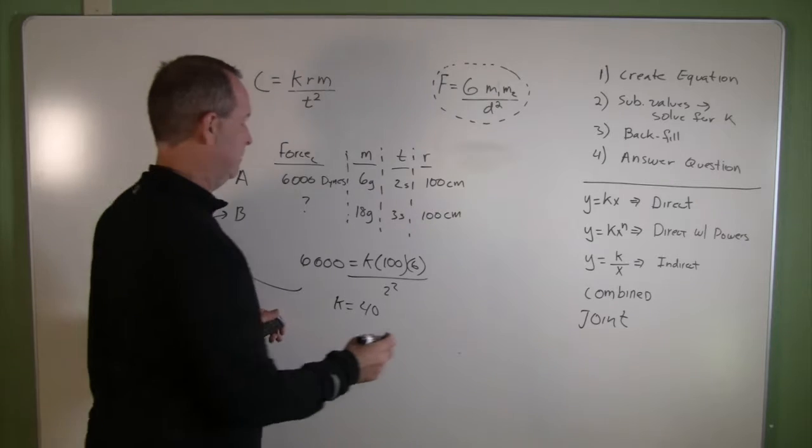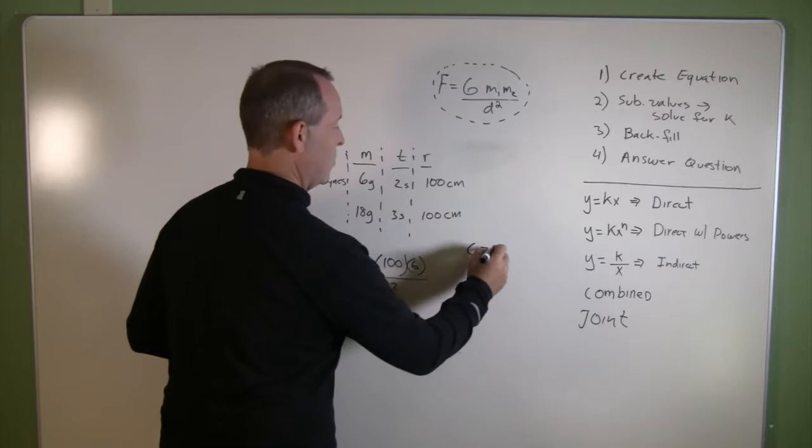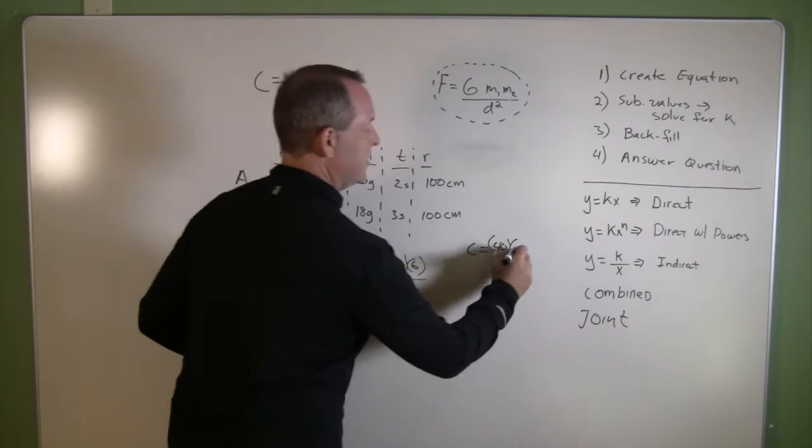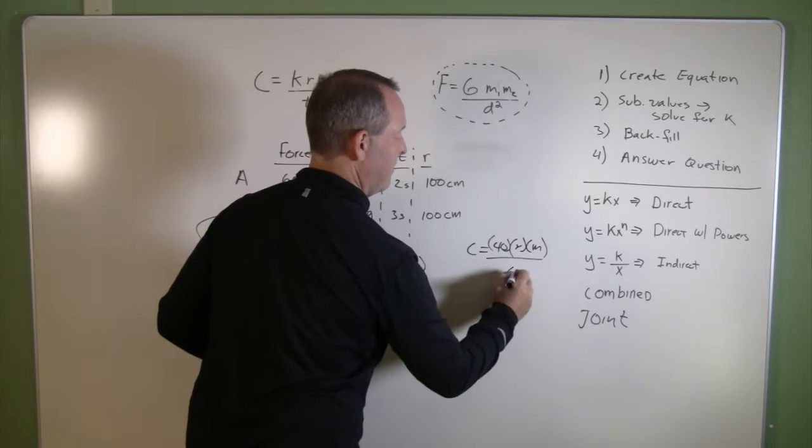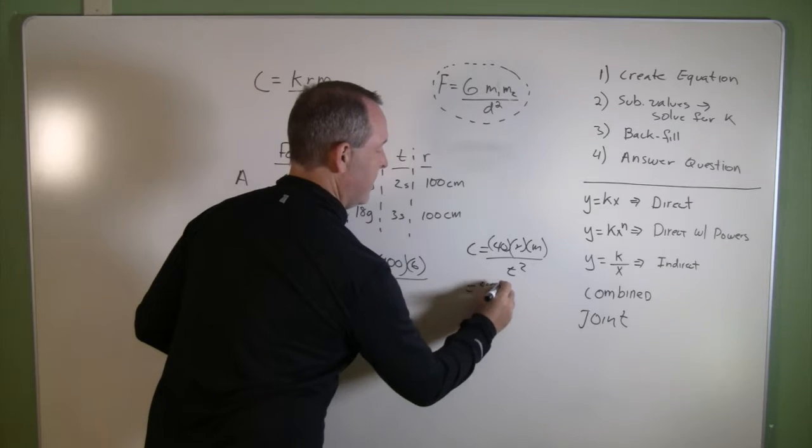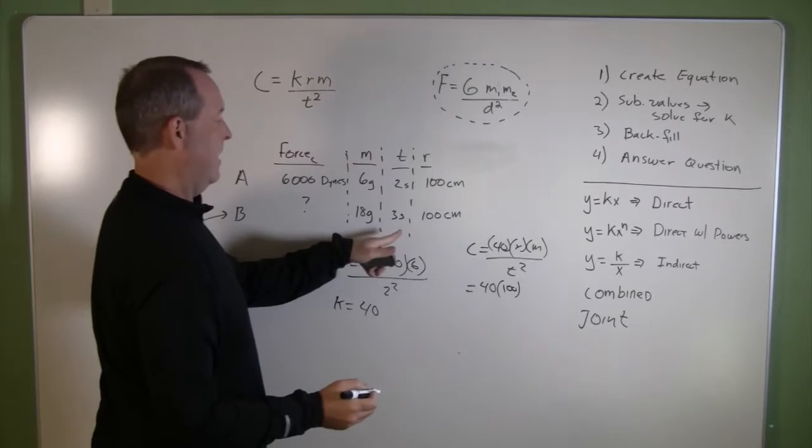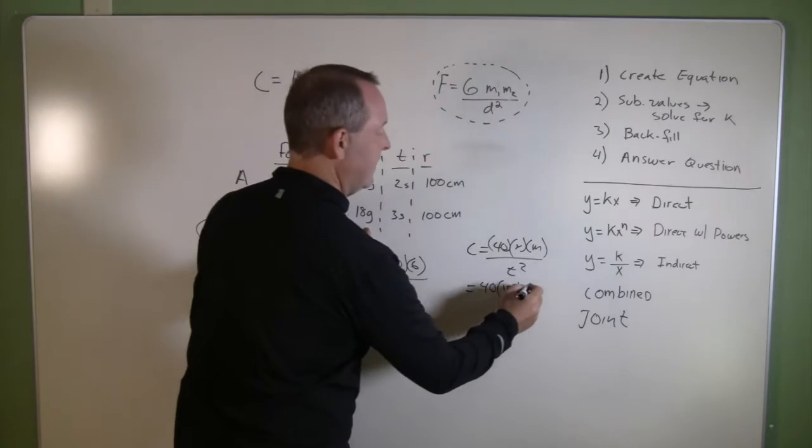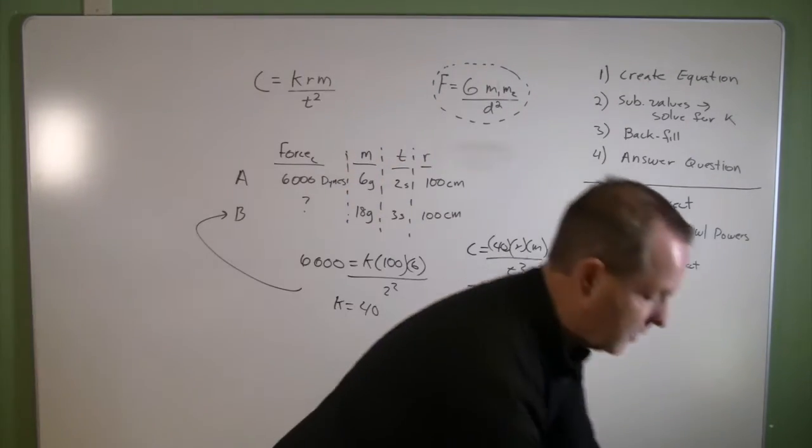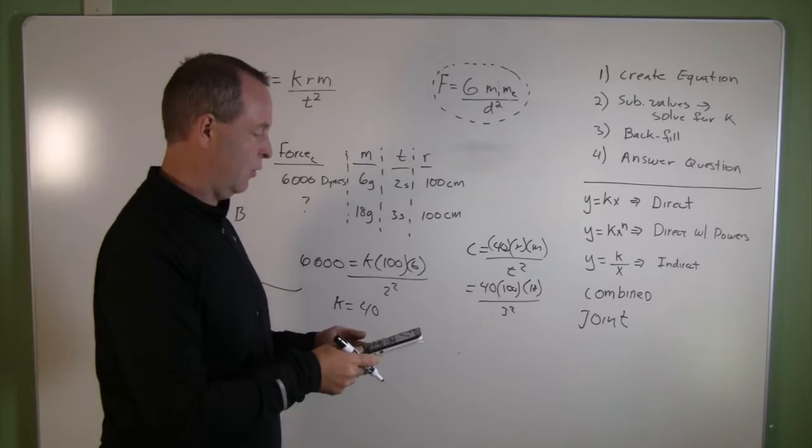So let's plug this in. Then we have our new equation: C equals 40, which is my proportionality constant, times its radius, times its mass, divided by time squared. The new information is 40 times radius is still the same. Mass is 18. I have a new mass and I have a new time. So given the second set of criteria now,